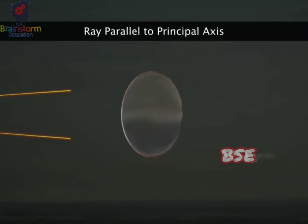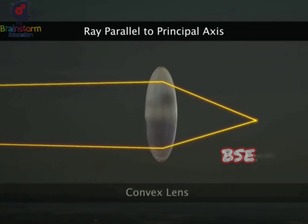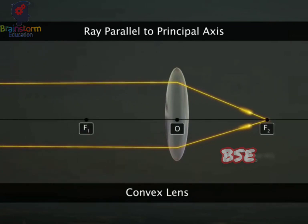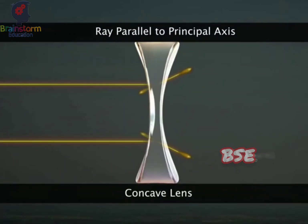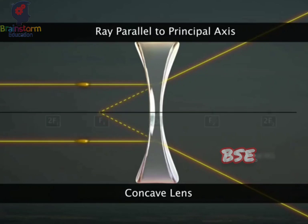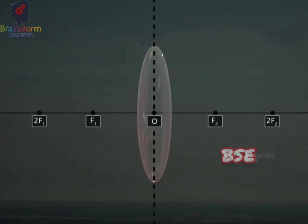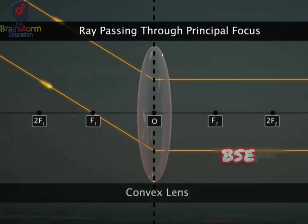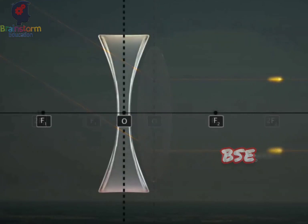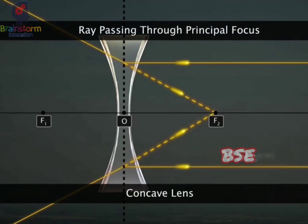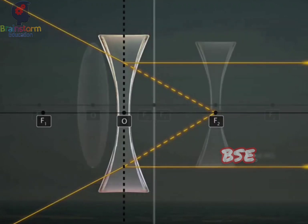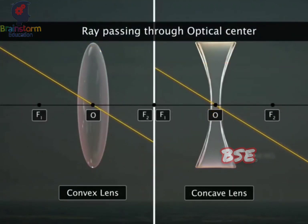A ray of light parallel to the principal axis, after refraction through a convex lens, passes through the principal focus on the other side of the lens. In the case of a concave lens, the ray appears to diverge from the principal focus on the same side of the lens. A ray passing through the principal focus of a convex lens after refraction emerges parallel to the principal axis. In the case of a concave lens, a ray traveling towards the principal focus after refraction emerges parallel to the principal axis. A ray of light passing through the optical center of a thin lens passes undeviated.